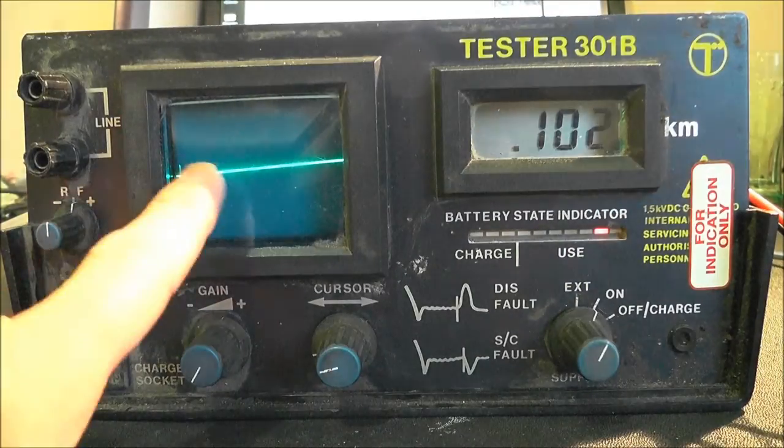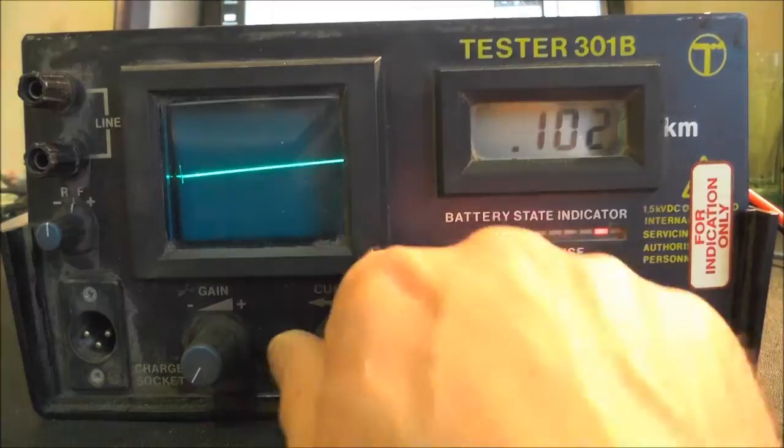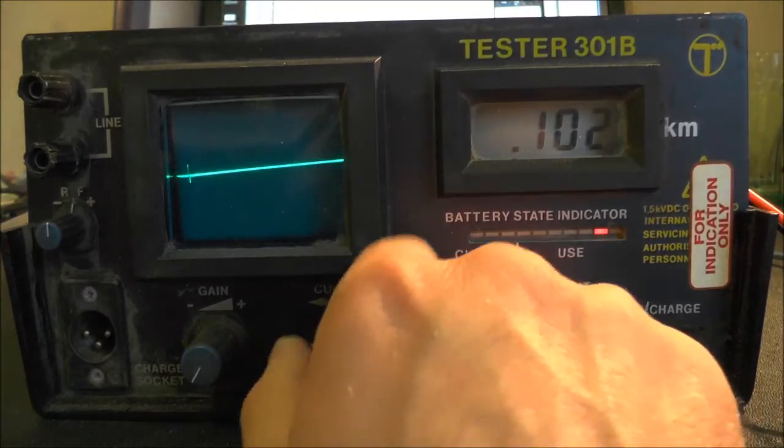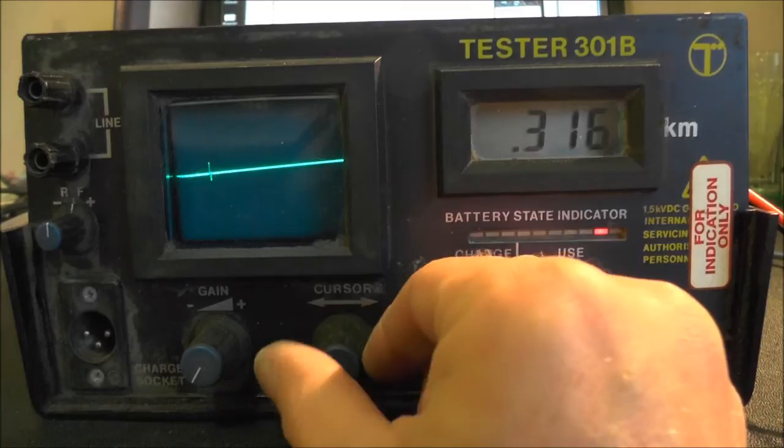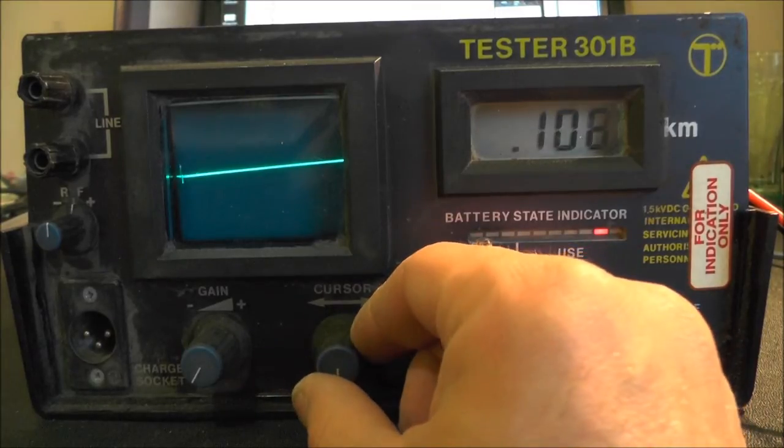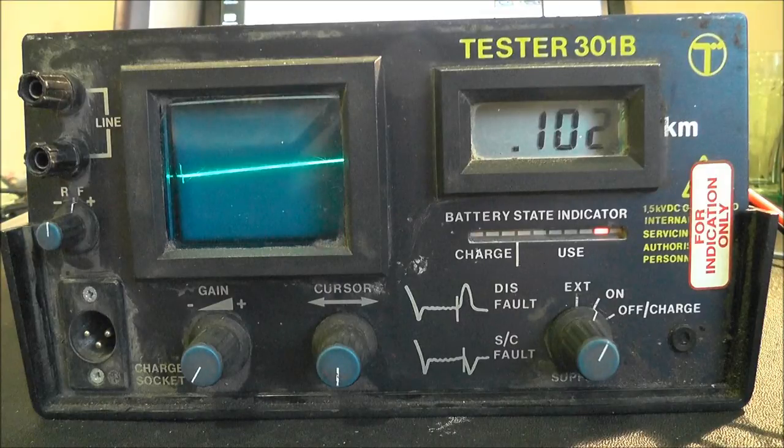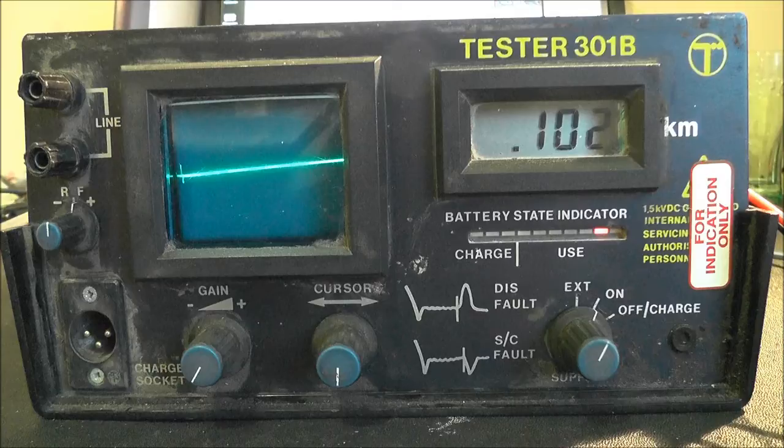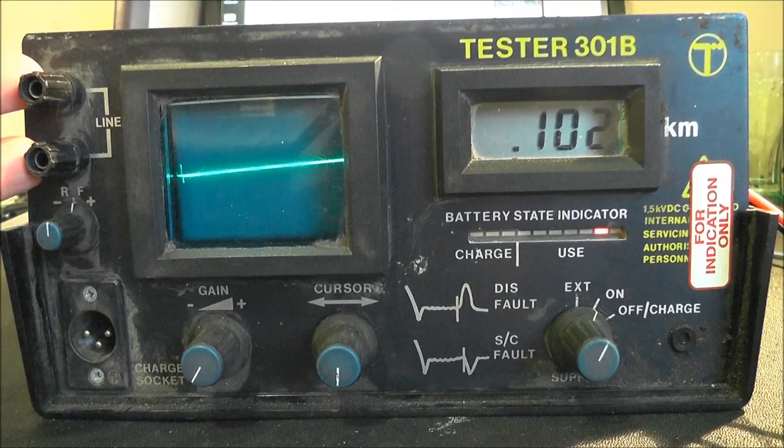So as you can see we've got the trace on this CRT and we've got the minimum showing here. So the cursor is just operated with this pot here. So obviously the minimum that you can measure is 0.102 kilometres or 102 metres. You'd normally connect up your cable onto here.